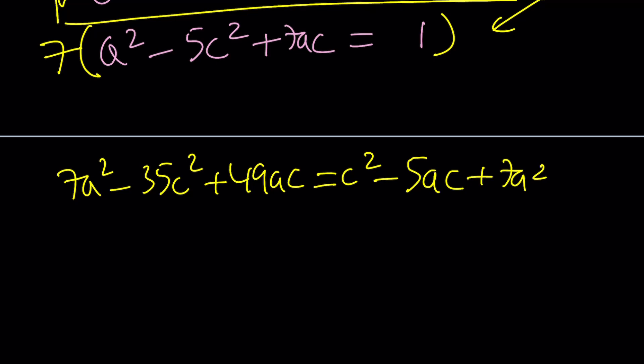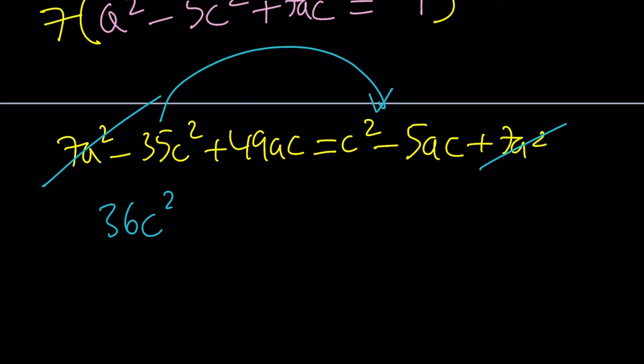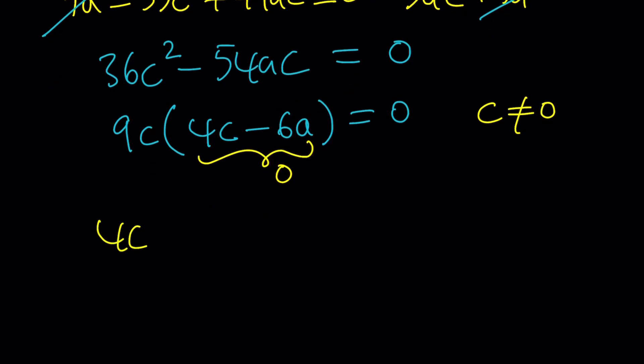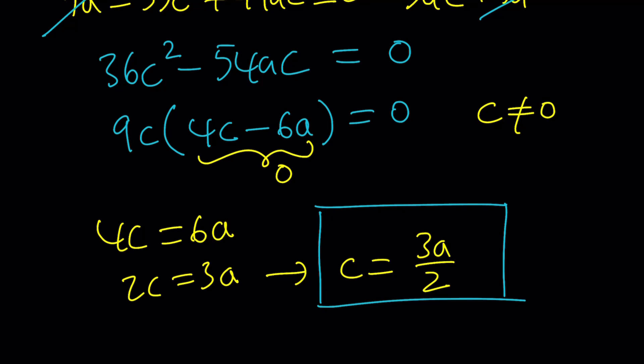Now we got something real nice and there's actually a bonus. 7a squared cancels out, making it even better. Let's go ahead and put everything on the positive c squared side. 36c squared minus 54ac equals 0. 36 and 54, their greatest common factor is 9. So, I can take out 9c and that gives me 4c minus 6a equals 0. C cannot be 0. Because if you think about it, the second equation was this. And if c is 0, this is going to give you b squared equals negative 5. Then, b is not going to be real. This means c does not equal 0. Then, this has to be 0. So, 4c equals 6a, which means 2c equals 3a or c equals 3a divided by 2. This is actually a really nice relationship.